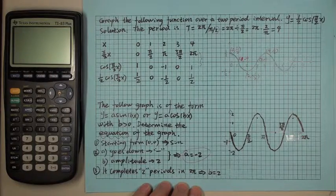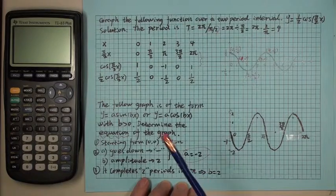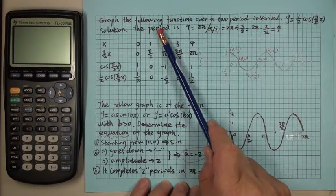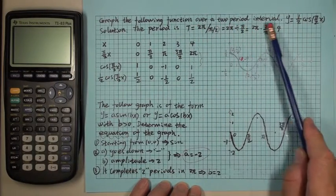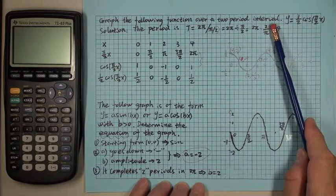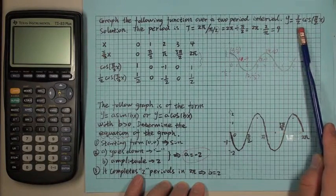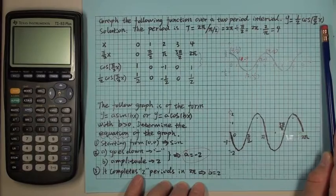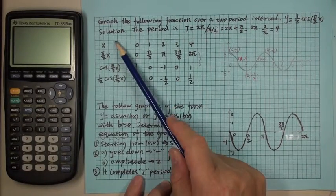In this lecture, we will look at a few examples. The first one is to graph the following function over a two-period interval. The function is y equals one-half cosine of pi over two times x. Here is the solution.